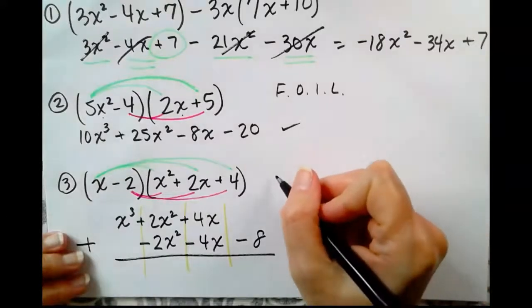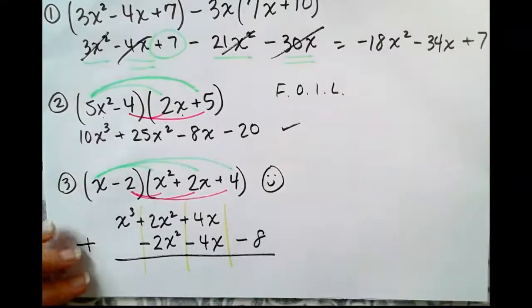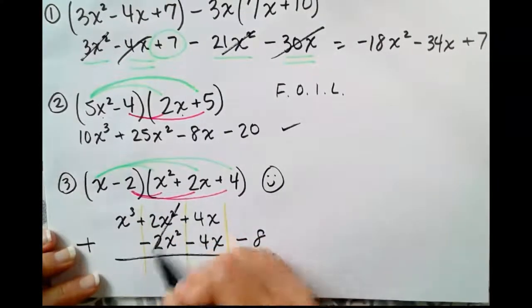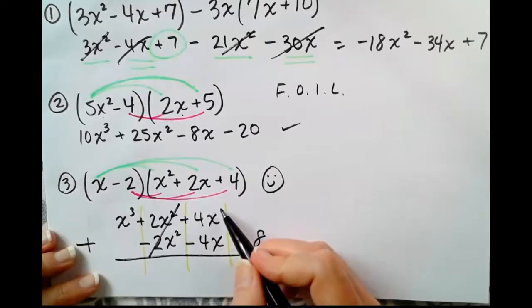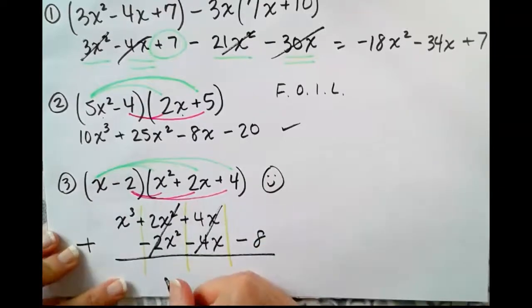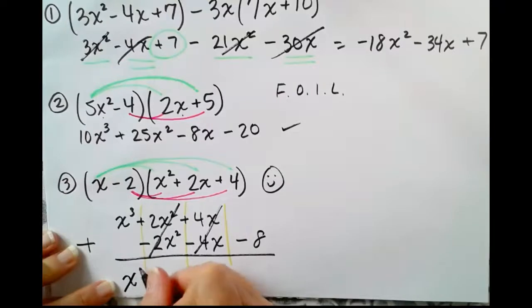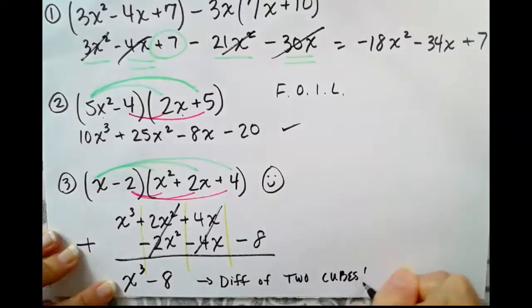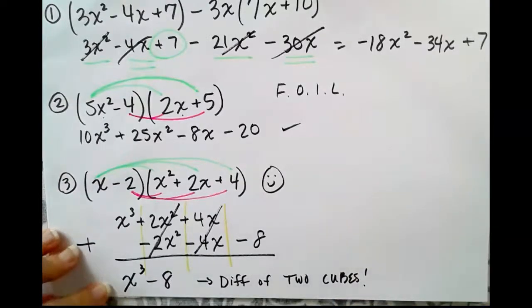If I were you, I would put a little smiley face by this problem because we're going to see this again. Our squared terms cancel and our linear terms cancel, leaving us with only x cubed minus 8. This is called the difference of 2 cubes. We're going to see it again in the next lesson.